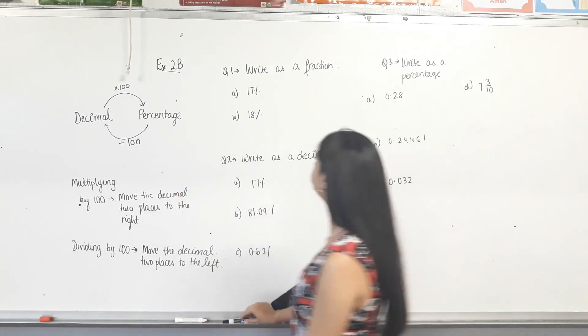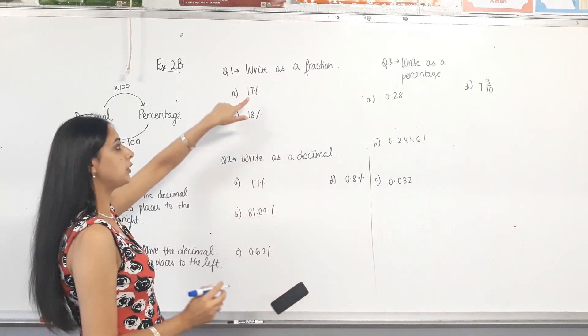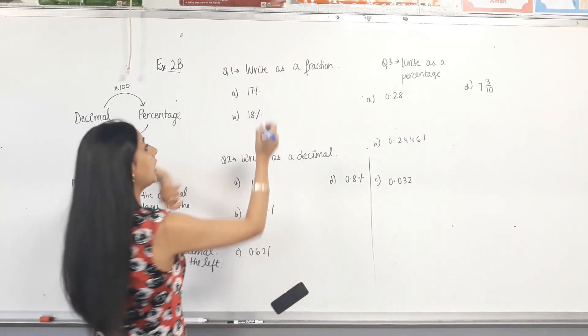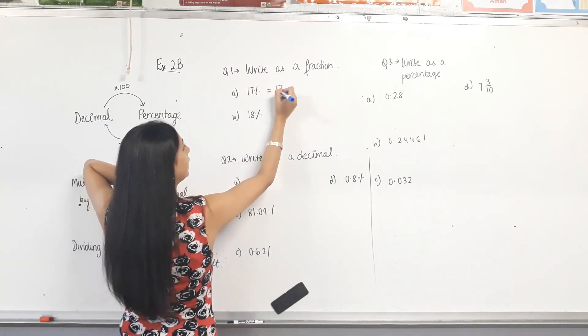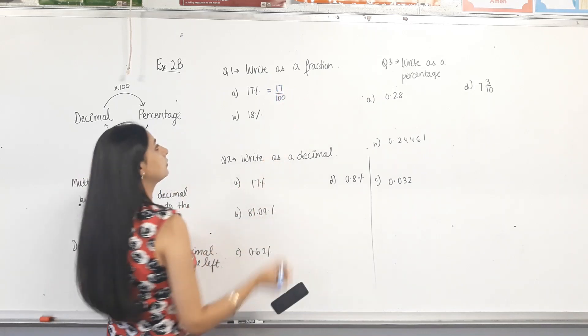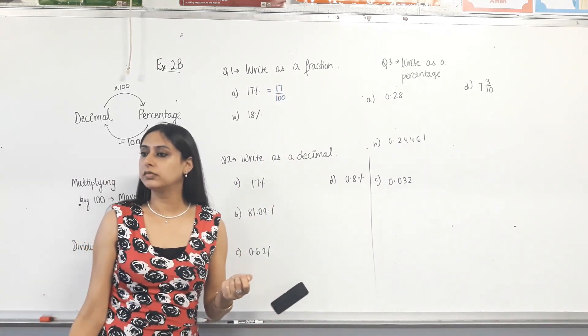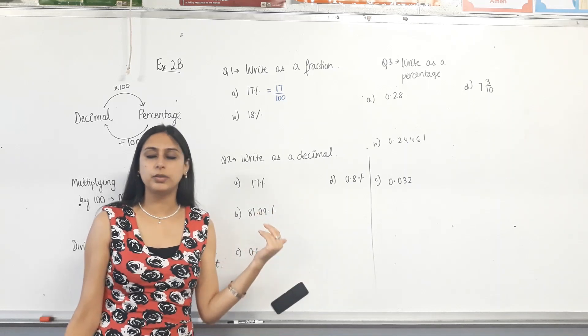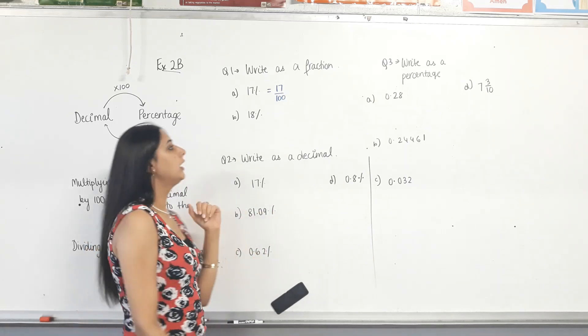So let's do these questions. Write as a fraction. So it is a percentage. We are writing it as a fraction, so we divide it by 100. That's it. Can we simplify? Are there any numbers? 17 and 100 are both divisible by? No.